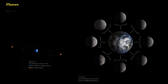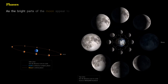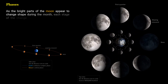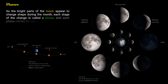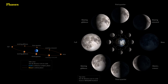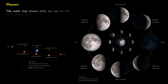As the bright parts of the moon appear to change shape during the month, each stage of the change is called a phase, and each phase carries its own name. The outer ring shows what we see on the Earth during each corresponding part of the moon's orbit.